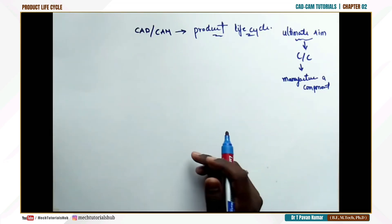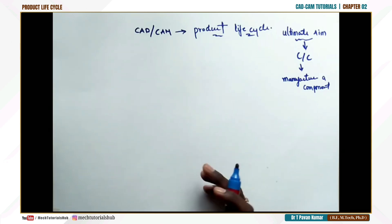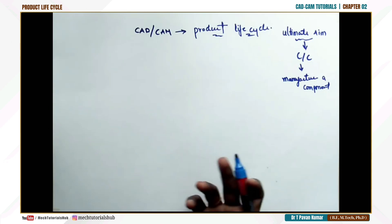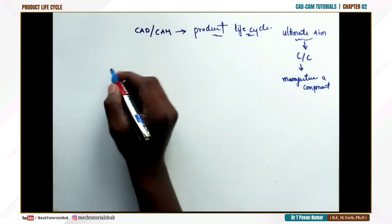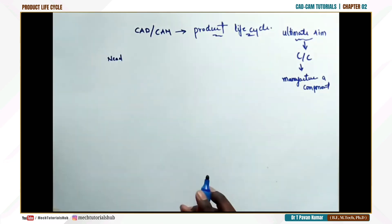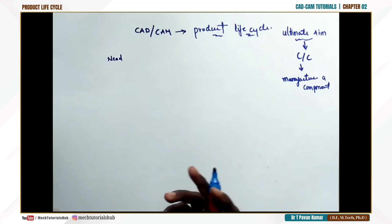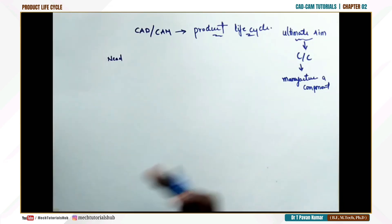Before the introduction of CAD software, the product cycle used to be different. For example, it all starts with the need of the customer. Why do I need to manufacture a component? It all depends on the requirement. Once the need is known, the question is: can we manufacture it ourselves, or do we need to approach a company?